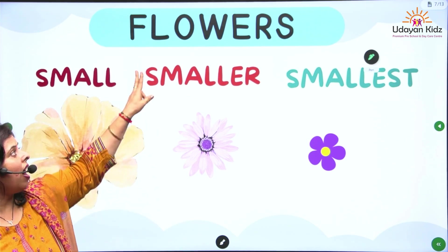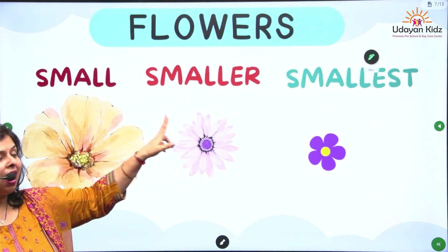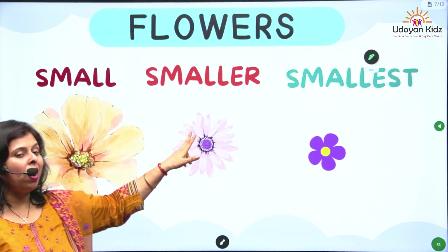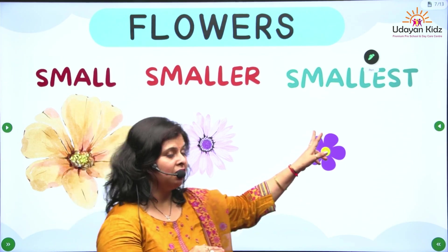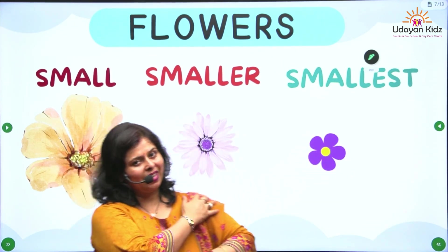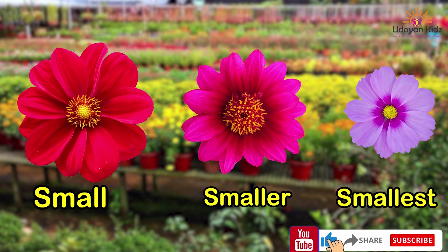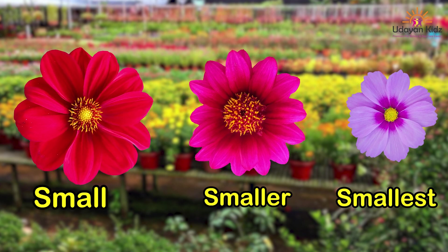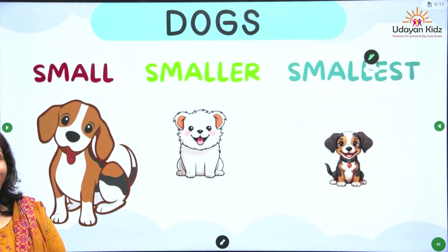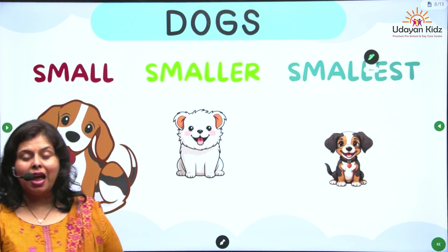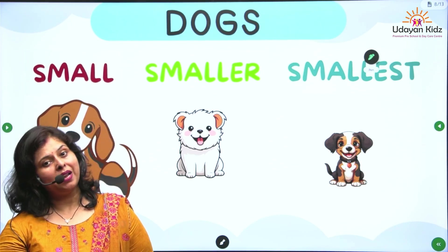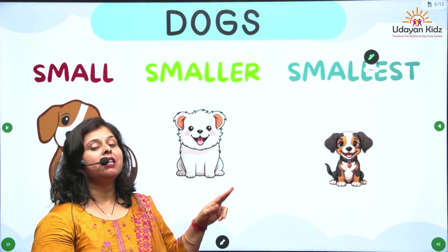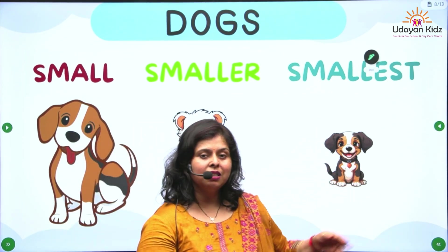Next, flowers. What is this? Flowers. This flower is small, this one is smaller, and this one is smallest. Okay? Next, dogs. Dog is a pet animal. The first one is small, the second one is smaller, and the third one is smallest. Okay?